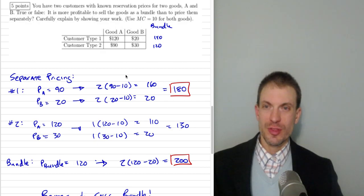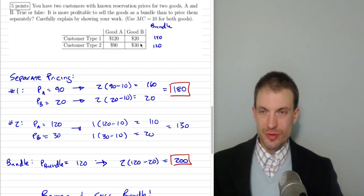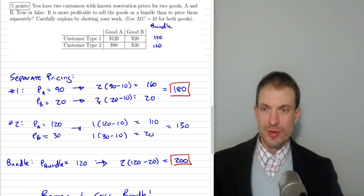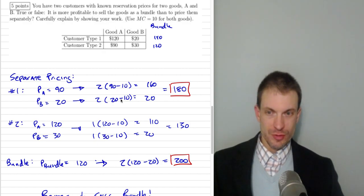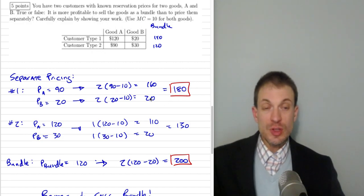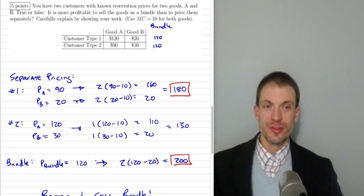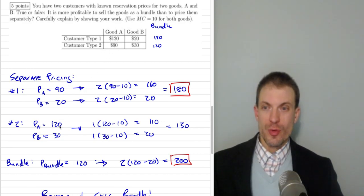For good B, set the price at $20. Consumer of type 2 would have paid up to $30, but at $20 we can sell to both consumers. Profits from good B are 2 × (20 − 10) = $20. Total profits from separate pricing are $180. Another option would be to set the price equal to the higher willingness to pay: set good A equal to $120. Only consumer of type 1 will buy, so we sell one unit and make $110 in profits.